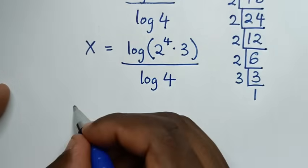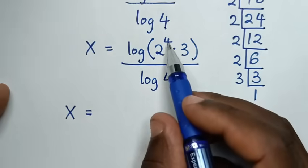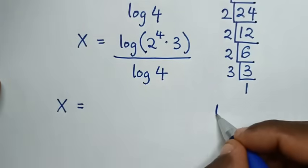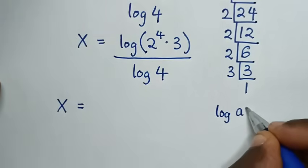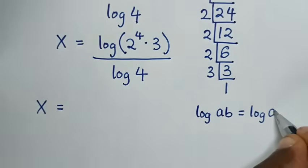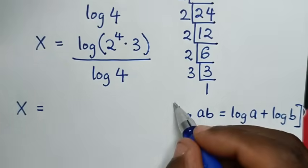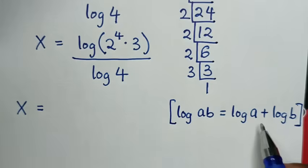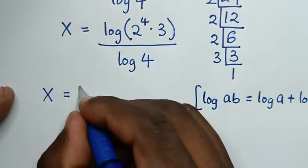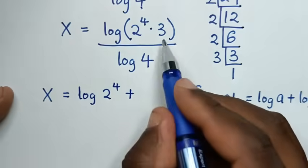In the next step, x is equal to log of 2 power 4 times 3, over log of 4. This part is in the form of log of a times b, which is equal to log of a plus log of b. So by applying this form, it will be log of 2 power 4 plus log of 3, over log of 4.